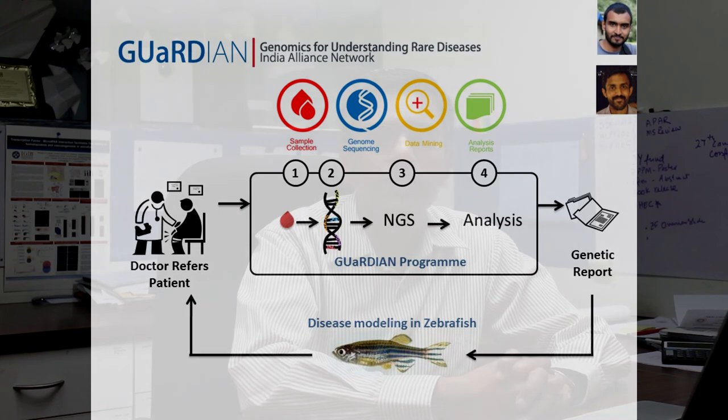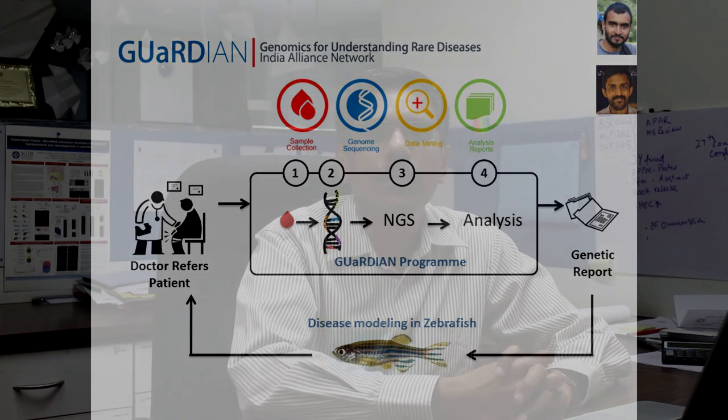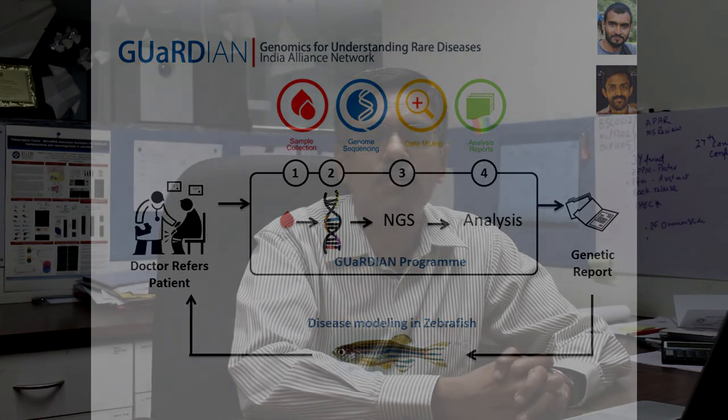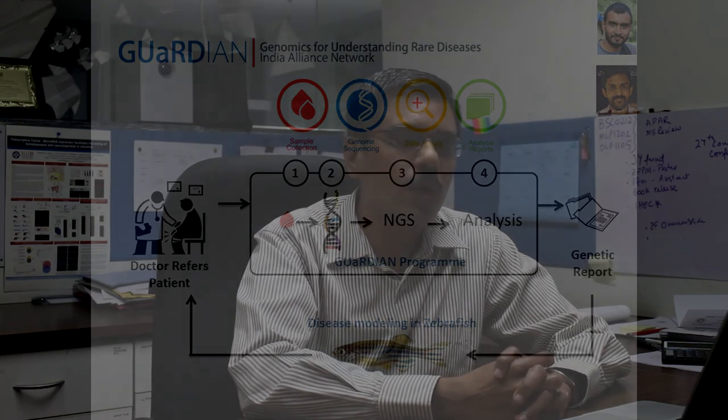Since these are novel variations, we must implicate them in the disease process — a process called functional validation — and this is why we bring in zebrafish. Combining our knowledge of zebrafish background variation with our ability to sequence human genomes, we model human variations back into zebrafish and attempt to functionally validate them.